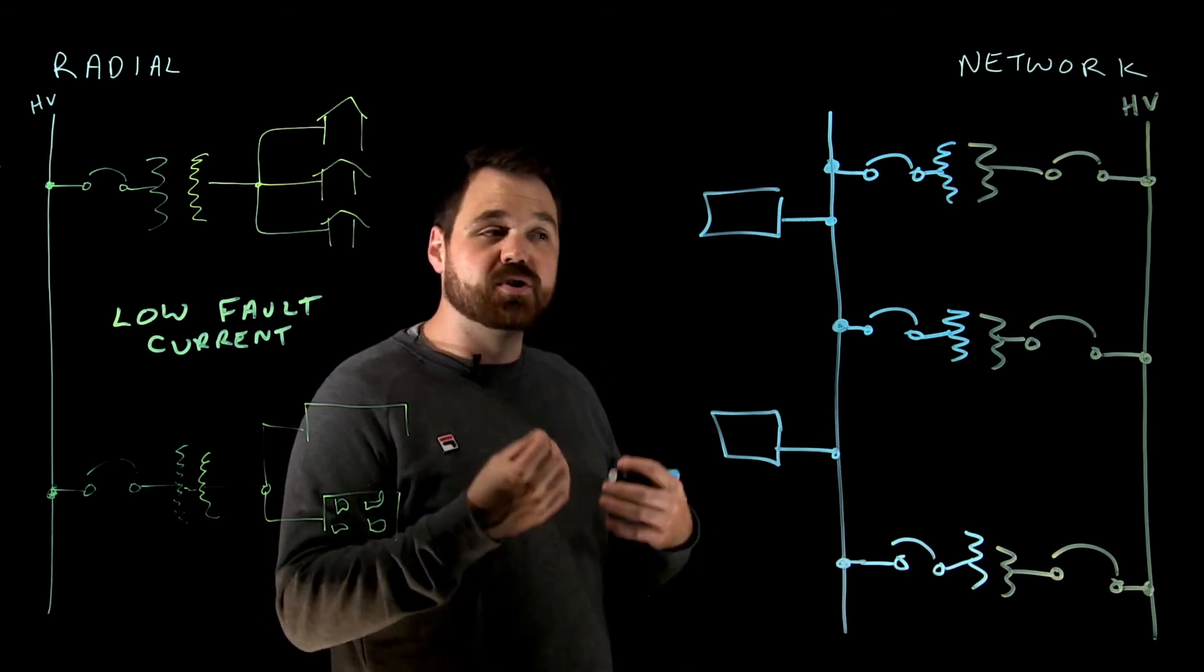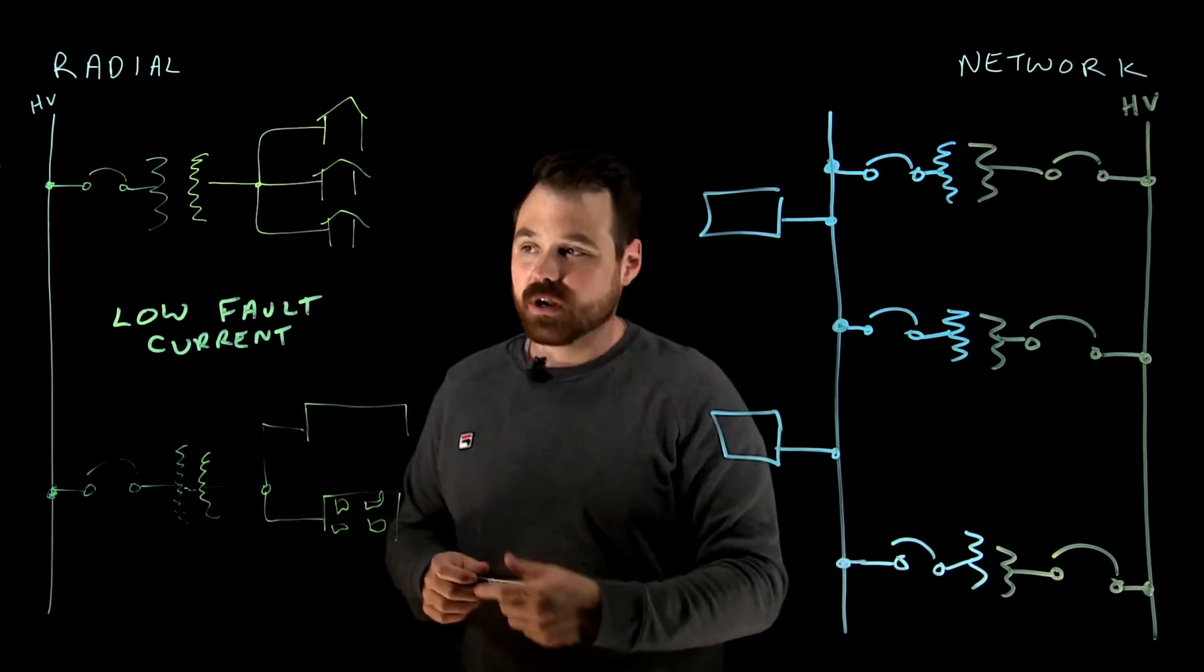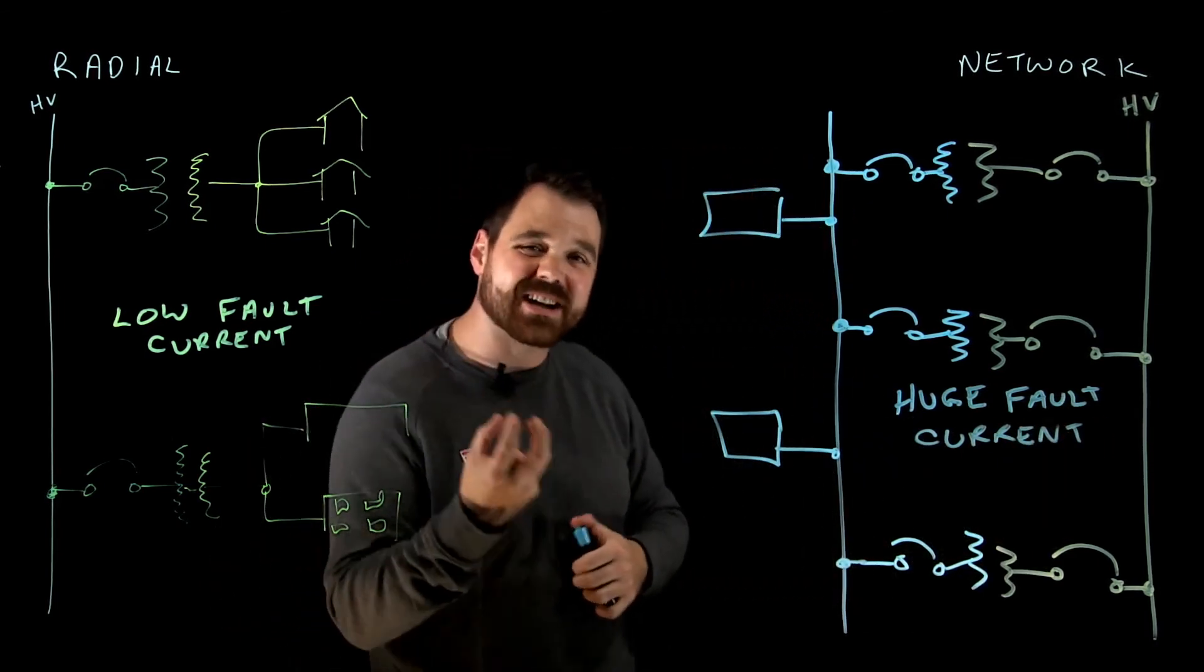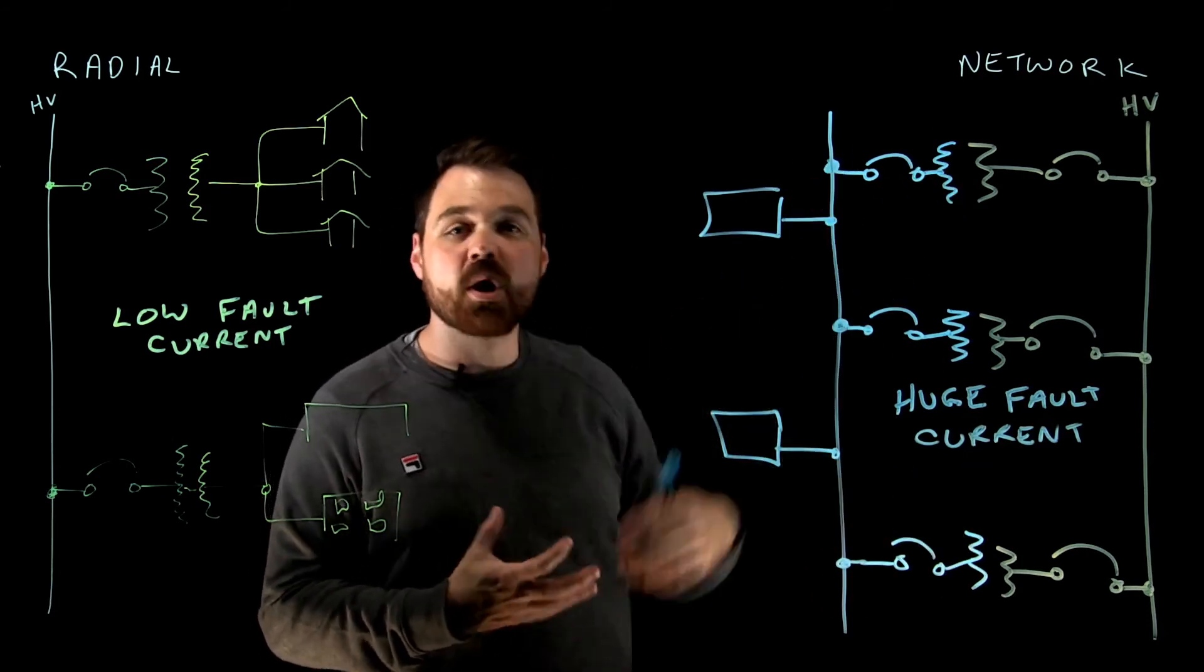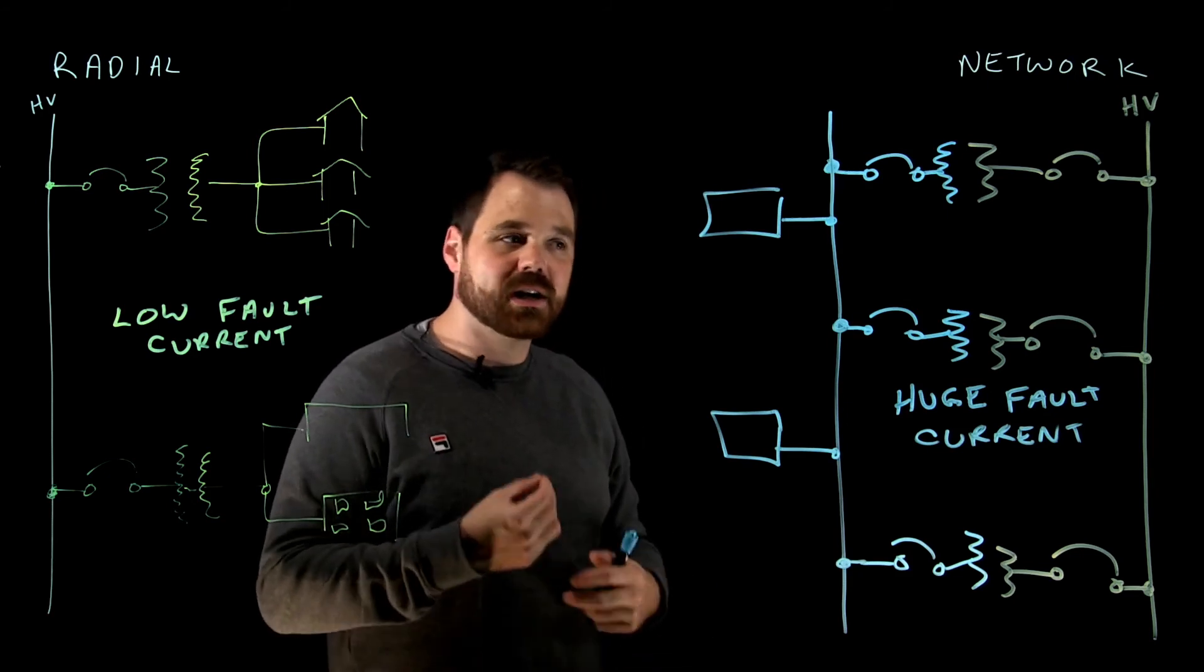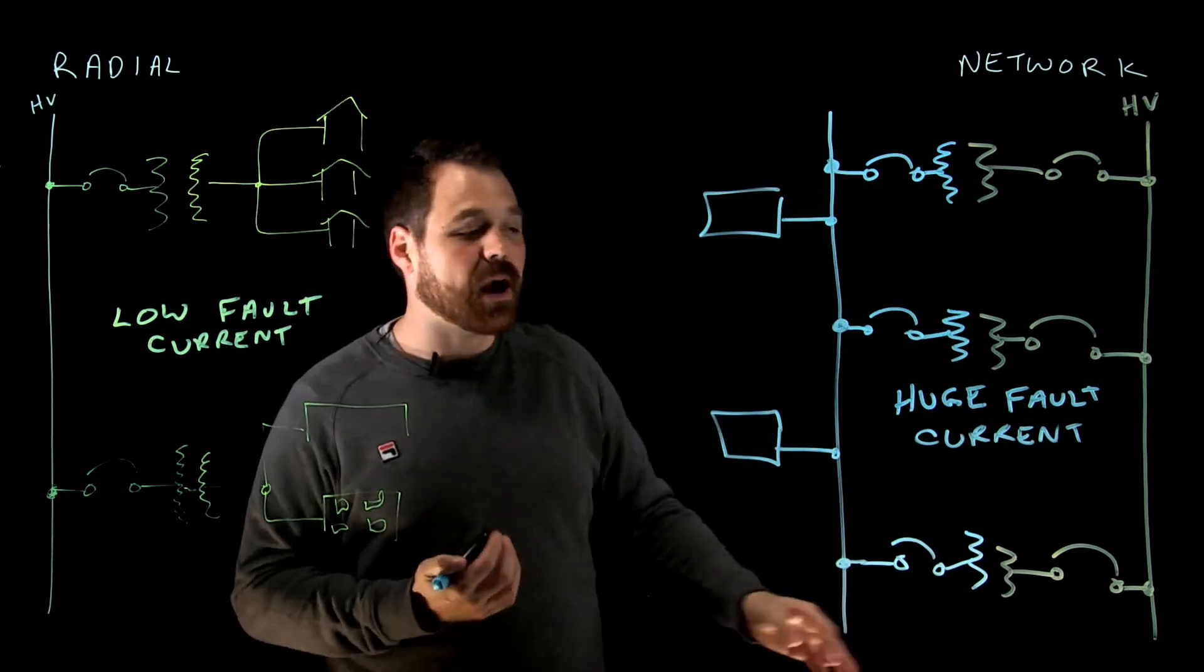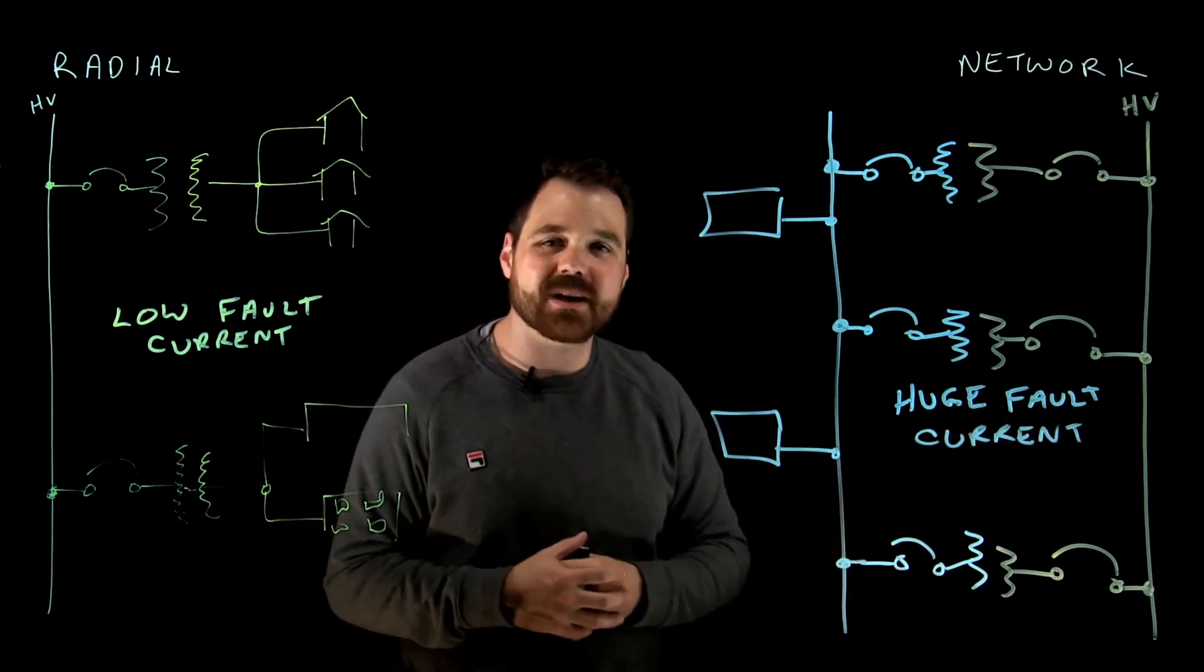However, that can provide a few problems. Because we have that big available KVA, now what could happen is we could have a huge fault current. So we need to be careful with this when we are sizing our protection devices, they often need a higher interrupting rating, because they need to be able to interrupt the fault current of multiple transformers. So it is really something that you need to work with your supply authority or your utility provider with. And sometimes this can even be a closed loop where they come back around in a circle, and that would be kind of called a ring system. But either way, it's all that network system, huge available KVA, a little bit more reliable. But we deal with bigger fault currents that we need to think about.